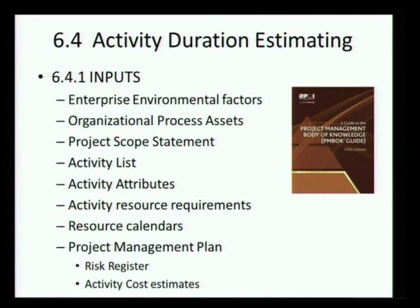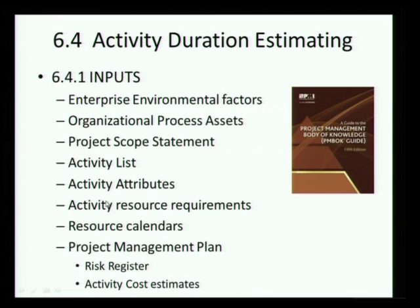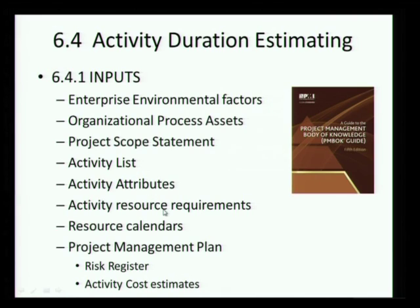Going back to the PMI standard for project management, they have a section on activity duration estimation with inputs, tools and techniques, and outputs. The inputs include enterprise environmental factors, organizational process assets, project scope statement, activity list, activity attributes, activity resource requirements, resource calendars, and the project management plan. This gives a broad idea of the various aspects that go into estimating duration, and we will look at a subset of this.